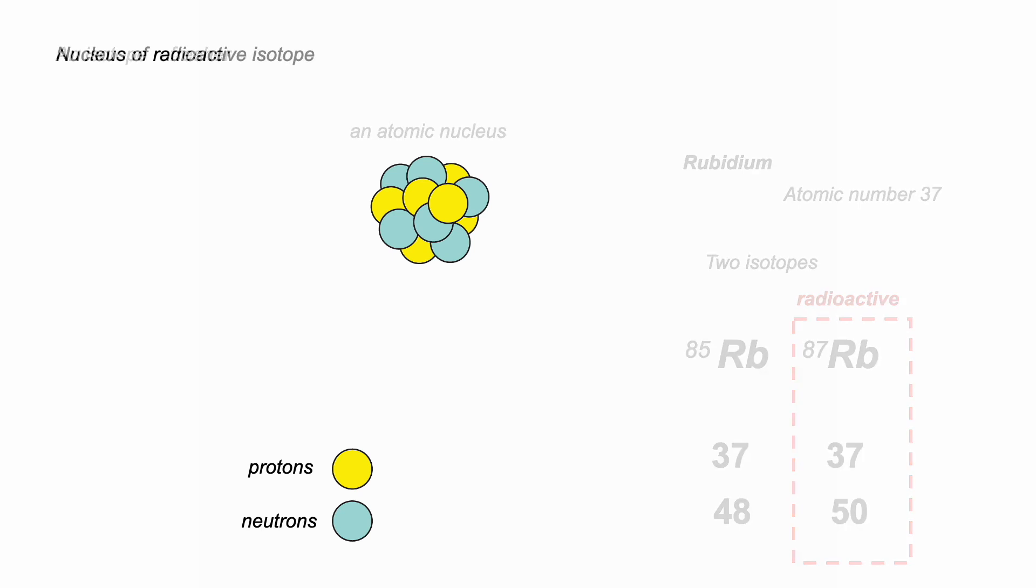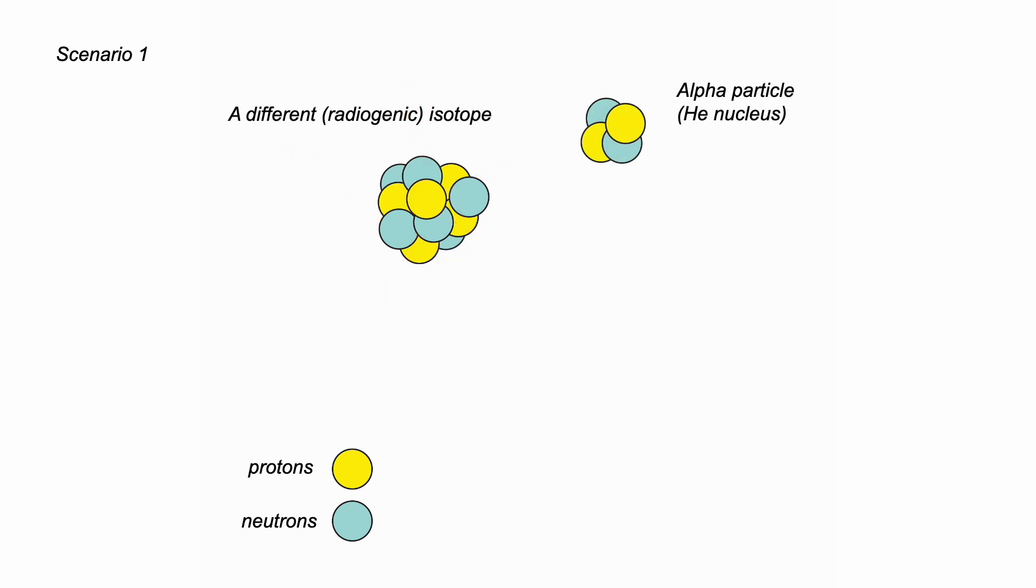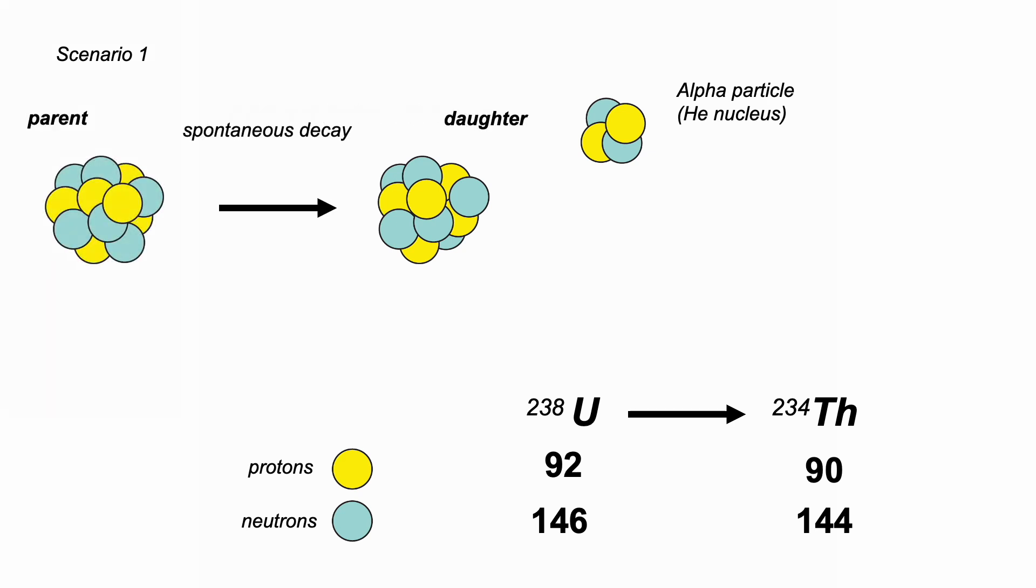In general, there are different types of radioactive decay. Here, the unstable nucleus decays to emit an alpha particle, essentially a helium nucleus. For example, 238 uranium, atomic number 92, decays to 234 thorium, atomic number 90. So the uranium isotope is the parent and the thorium is the daughter element.